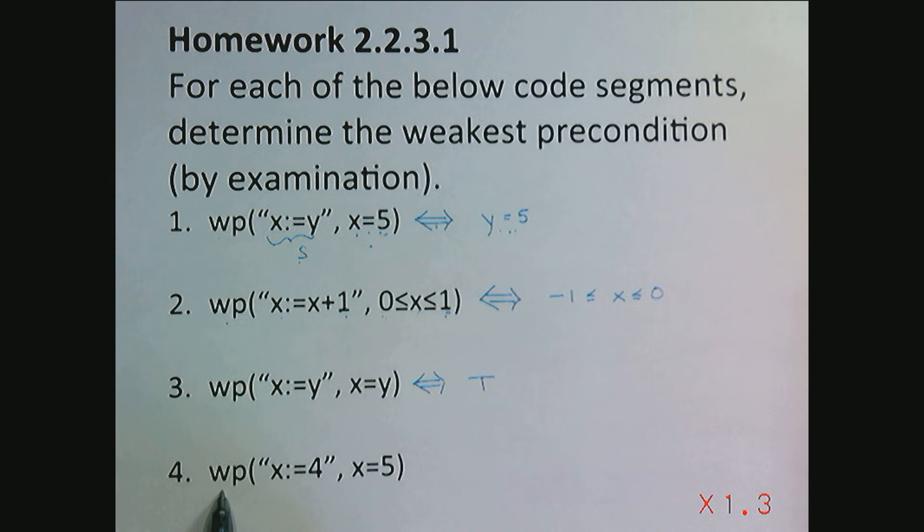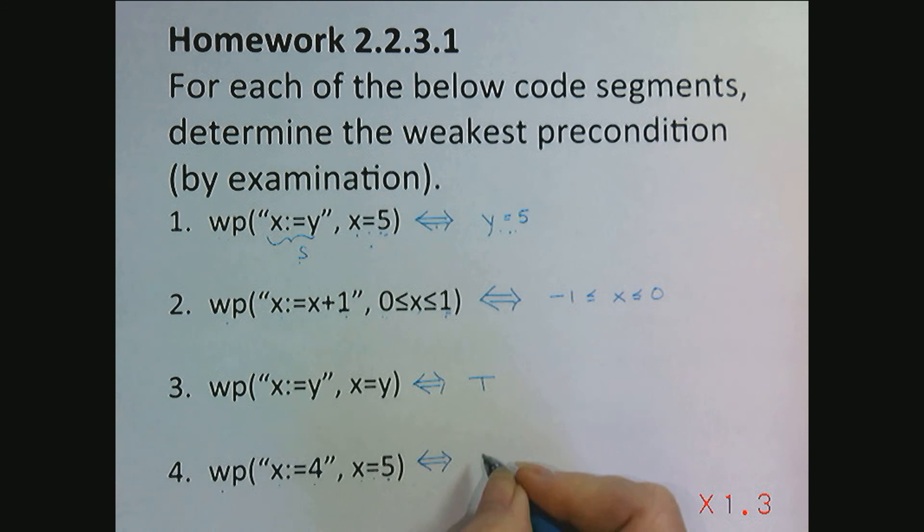Weakest precondition of x becomes 4 when x is equal to 5 after. Well, 4 is never 5, so no inputs will satisfy this. The predicate corresponding to none or the empty set is false.